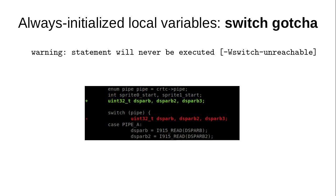One funny edge case: if you declare a variable in the space between a switch statement and the first case, the initializer code will never execute, so the compiler correctly flags it. I wrote a patch to lift those variable declarations out of switch statements. When I sent it out, no one freaked out about auto-initializing all variables — they were only concerned about moving things out of switch statements that looked weird anyway.